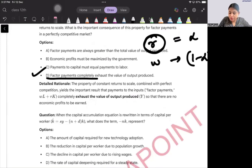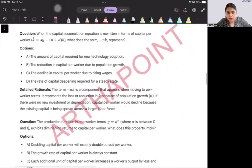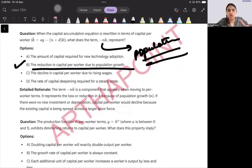Next question: when the capital accumulation equation is rewritten in terms of capital per worker, what does minus nK represent? This is due to population. The answer is going to be B: reduction in capital per worker due to population. When population increases, capital gets distributed among more people.